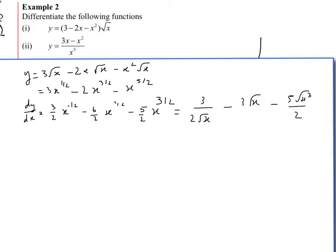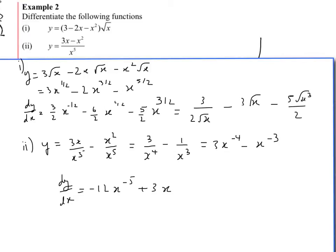You might want to pause the video and have a look at the second one. Let's do the second one. Again, you want to separate these into terms. So you've got 3x/x⁵, take away x²/x⁵. If you put them in index form, we get 3x^(-4) - 1/x³, which is 3x^(-4) - x^(-3). Now differentiate, dy/dx gives us, bring the power down, -12x^(-5) + 3x^(-4).